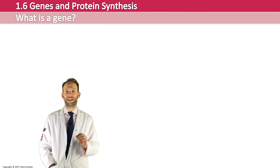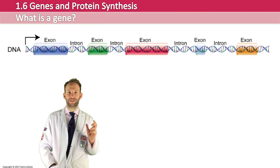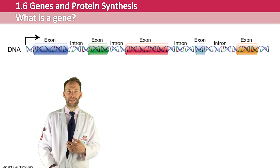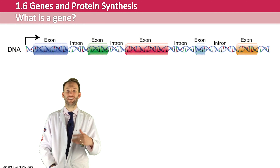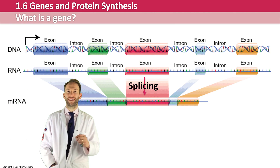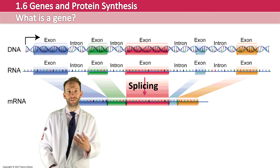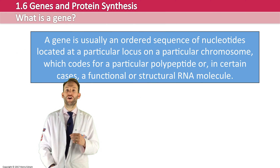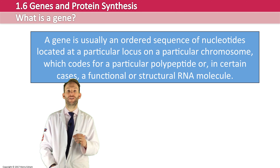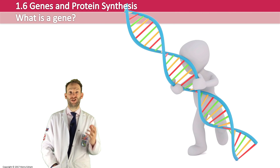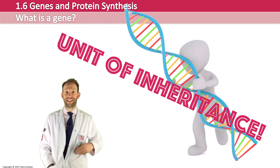Genes are actually interrupted by non-coding sequences called introns. If you look at a gene, usually you've got a promoter at the beginning, then some introns and some exons. The exons are the bits that actually code for the polypeptide or the RNA. What has to happen is the introns need to be spliced out — taken away — so just the exons are used when the gene is read. So a much better, though not perfect, definition is: a gene is usually an ordered sequence of nucleotides located at a particular locus or loci on a particular chromosome, which codes for a particular polypeptide or, in certain cases, a functional or structural RNA molecule. Or you could just say a gene is a unit of inheritance — that's much easier.